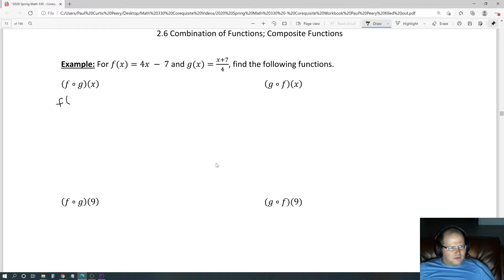What we have here is f of g(x). So what we do is plug in g(x). g(x) is (x + 7)/4, so it's 4 times (x + 7)/4 minus 7. When we multiply by 4, the 4s cancel out in the numerator and denominator, leaving x + 7 - 7. Those cancel out.